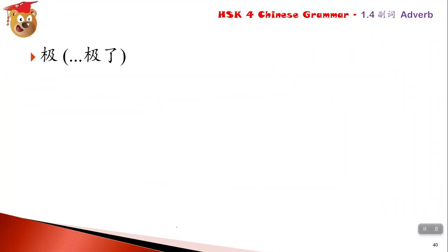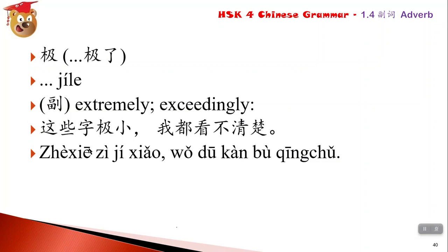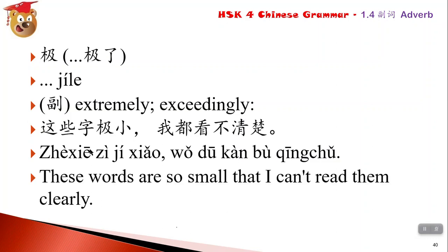极 means 'extremely.' For example: 这些字极小我都看不清楚. 极 here describes the adjective 小. These words are so small that I cannot see them clearly.